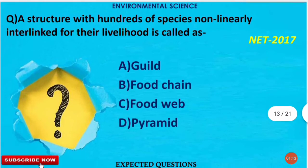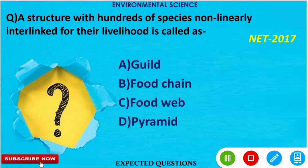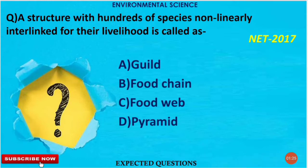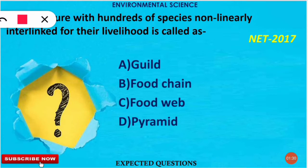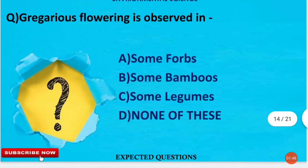The next question is: a structure with hundreds of species non-linearly interlinked for their livelihood is called as what? The correct option is C — food web. Species are non-linearly interlinked in a food web. If the question had asked about linearly linked species, the answer would have been food chain.